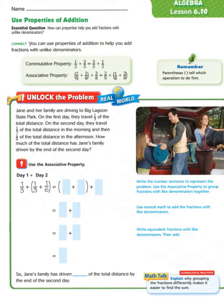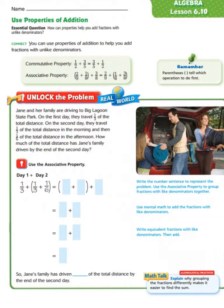Let's begin by looking at our word problem. Jane and her family are driving to Beak Lagoon State Park. On the first day, they traveled one-third of the total distance. On the second day, they traveled one-third of the total distance in the morning and one-sixth of the total distance in the afternoon. How much of the total distance has Jane's family driven by the end of the second day?